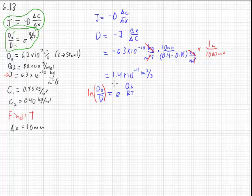Natural log of this equals the natural log of this. The natural log of e to the anything just ends up being the anything. So we've got the natural log of d0 over d equals qd over RT.